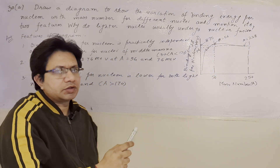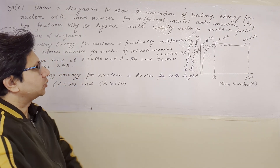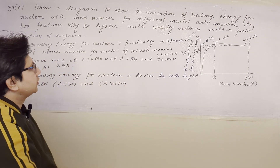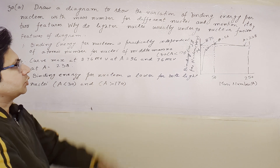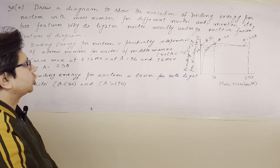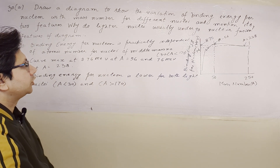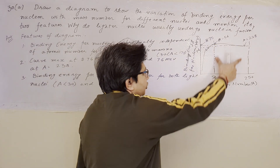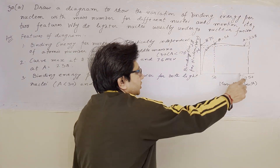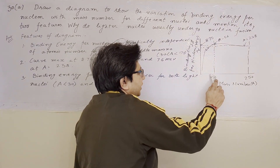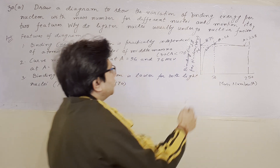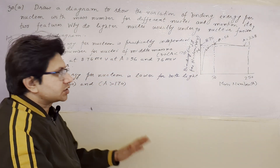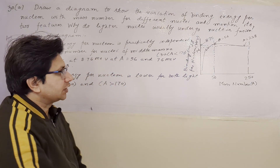There are certain features we have to explain from this diagram. The first point is that the binding energy per nucleon is practically independent of atomic number for nuclei of the middle mass number — for a certain range of mass numbers from 30 to 170, the binding energy per nucleon is independent of the atomic number.